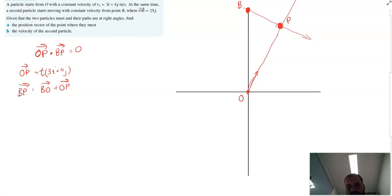Now, we know BO and we know OP. So BO is negative 25j, and OP is T bracket 3i plus 4j. And now we can sort of rearrange that to be 3Ti plus 4Tj minus 25j, which is 3Ti plus bracket 4T minus 25 bracket j.